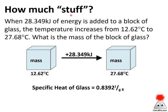We can also look at how much material we're dealing with. When 28 kilojoules of energy is added to a block of glass, the temperature increases from 12.5 to 27.5 degrees Celsius — what is the mass of the block? I know the beginning and final temperature, so I know the temperature change, and I know the amount of energy involved. The specific heat of glass is 0.8392 joules per gram Kelvin — a four sig fig value, but note the units are in Kelvin.